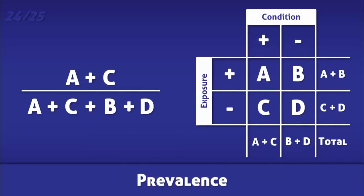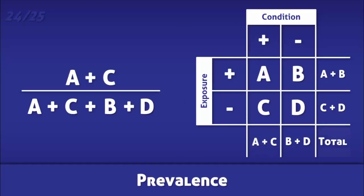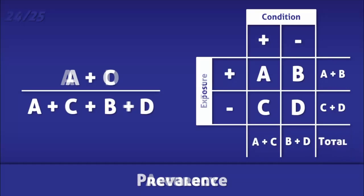Prevalence is the proportion of the population that have the condition. It is calculated by dividing the total number of people that have the condition by the total number of people in the population.